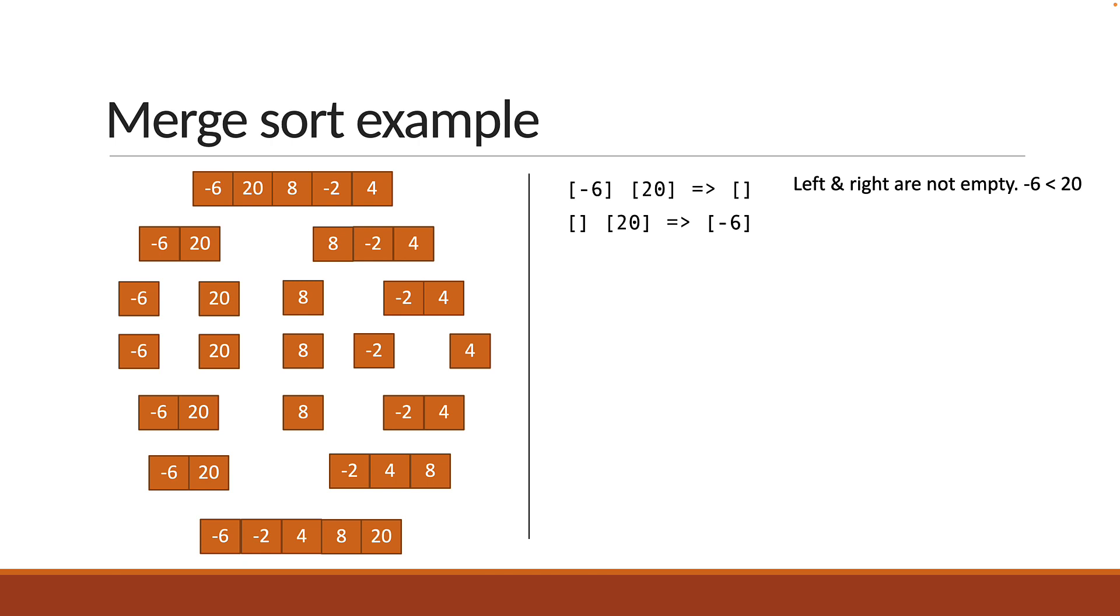Next we see that the left array is empty. So we simply push the element in the right array onto the temp array. When both the left and right arrays are empty, we have the sorted sub-array. That would be minus 6 and 20.